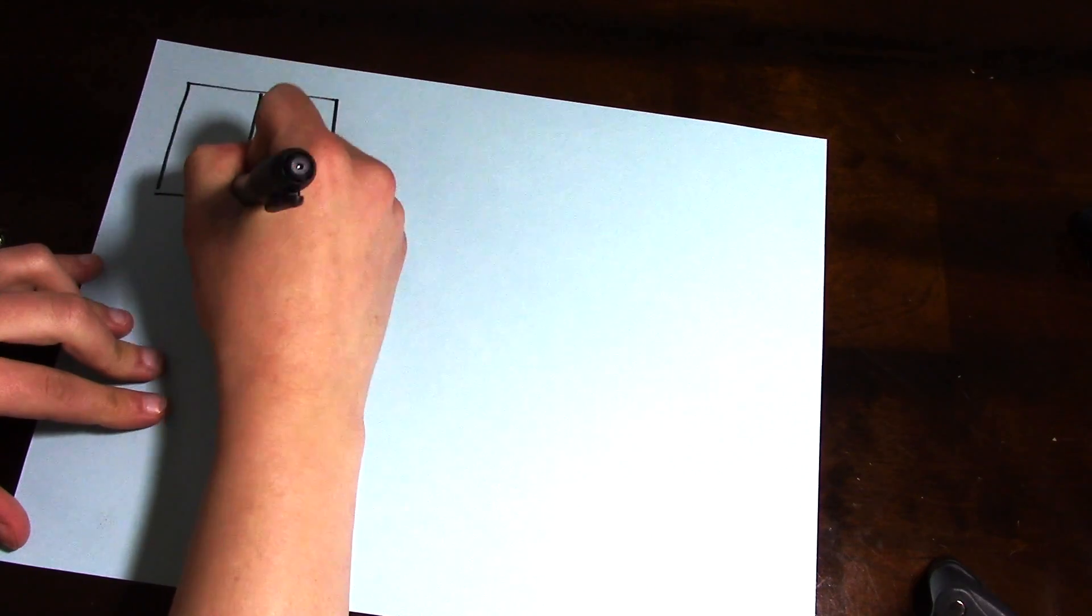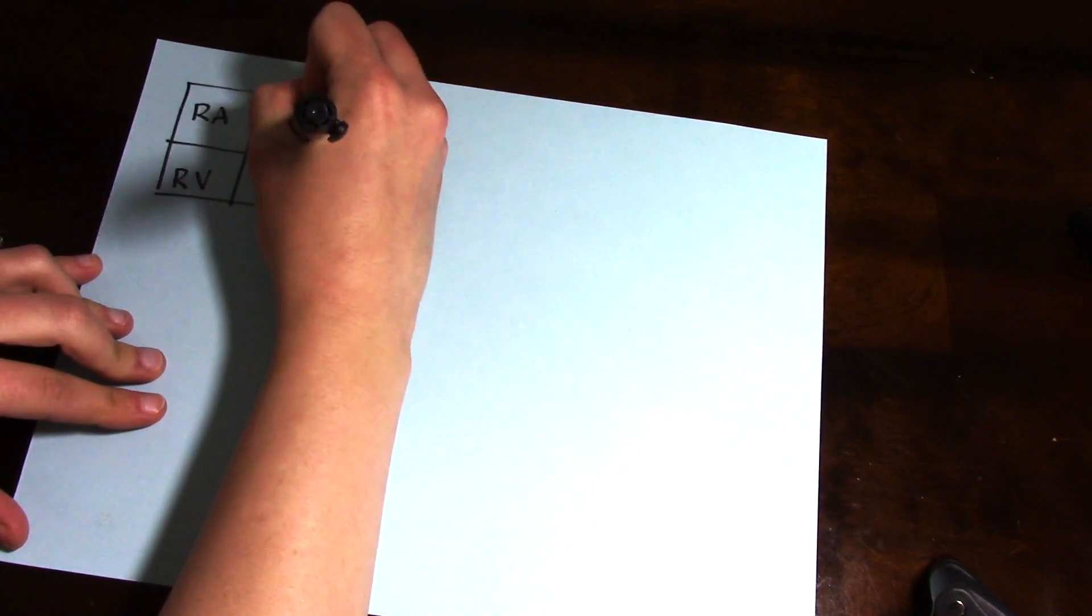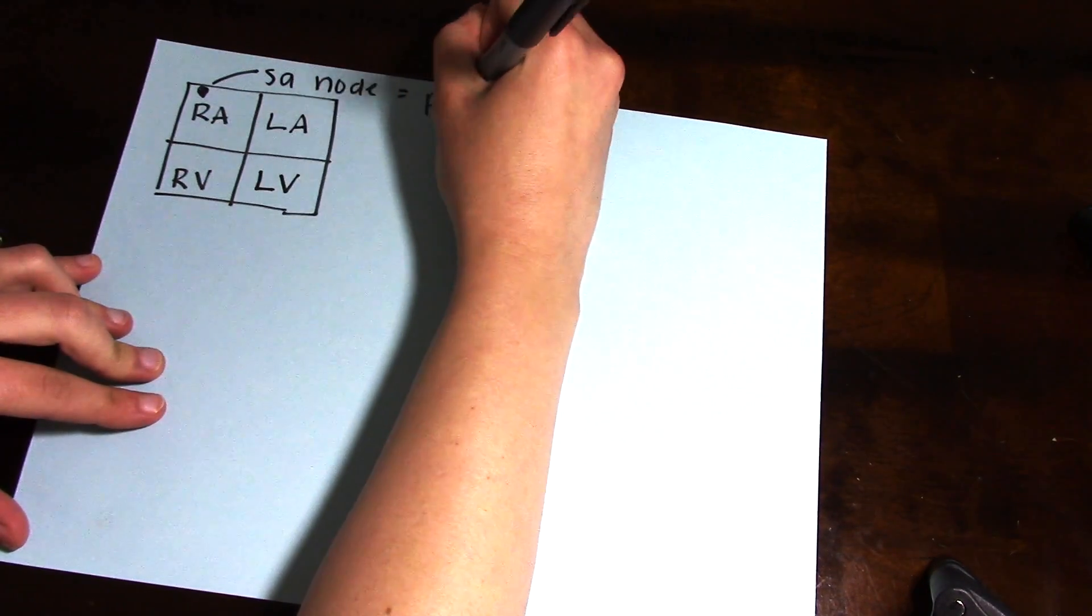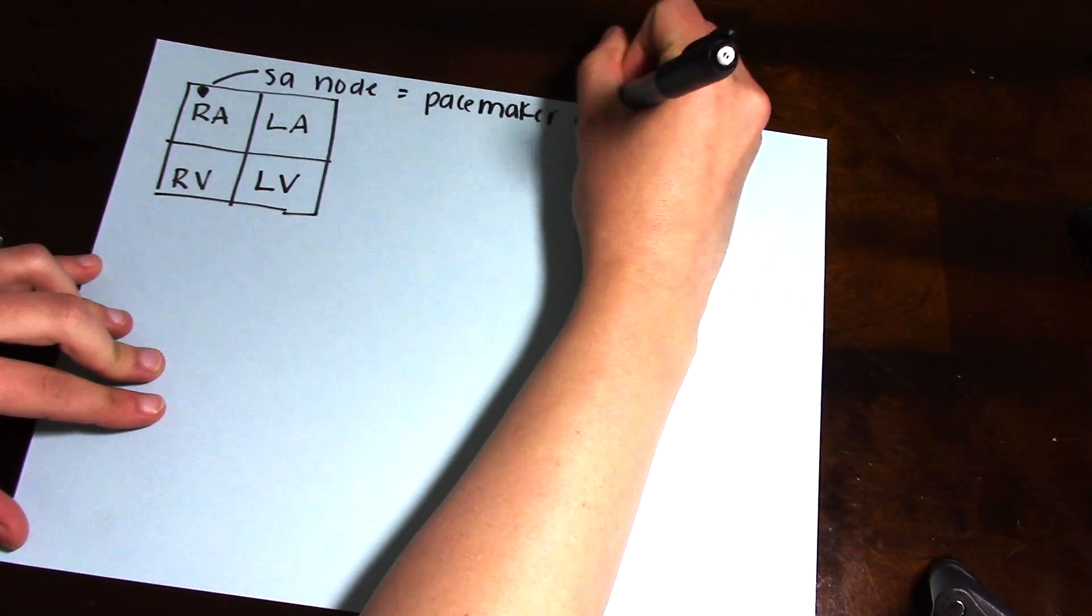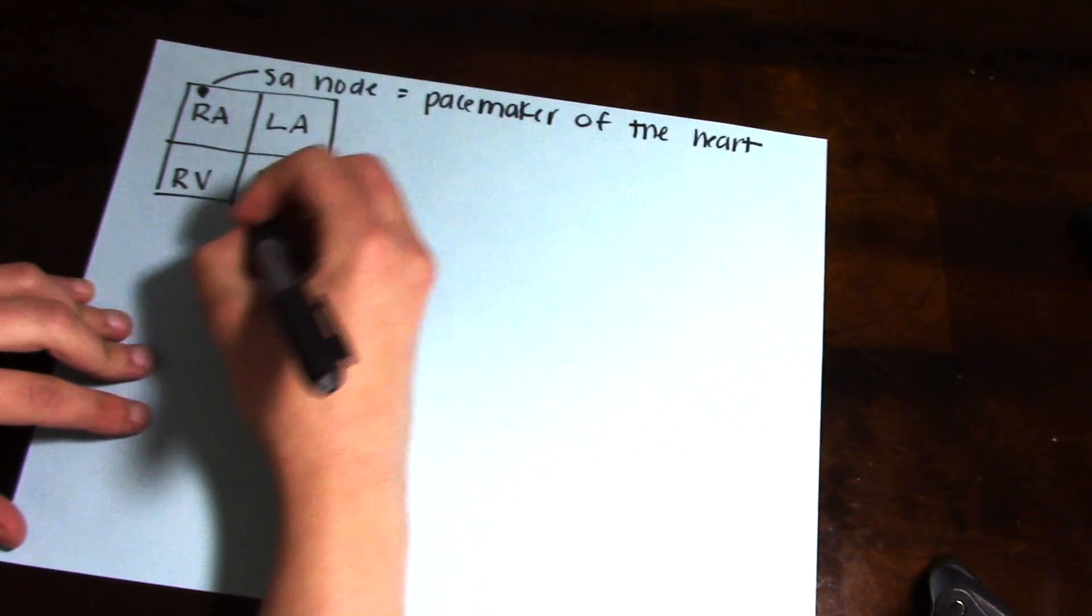I like to think of the heart as a box. You have your right atrium, your right ventricle, your left atrium, and your left ventricle. Your SA node is the node that is the pacemaker of the heart and conducts the impulses throughout the heart that cause the atriums and ventricles to contract.